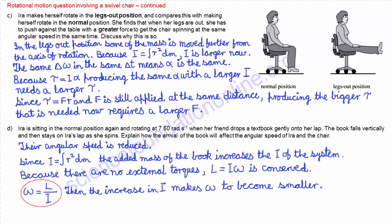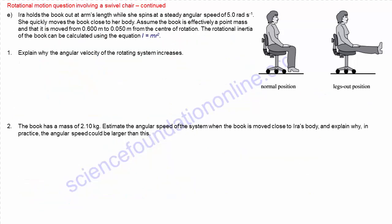Section 1 of Part E tells us that holding the book at arm's length when spinning at 5 radians per second, and then pulling it closer, makes the angular velocity increase, and asks us to explain this. Having already answered Part D, you should be able to see that this is again due to angular momentum conservation, except that moving the book closer decreases the moment of inertia, and this increases the angular velocity.